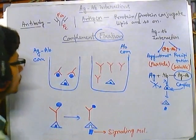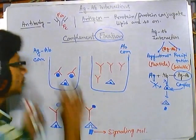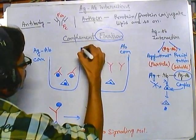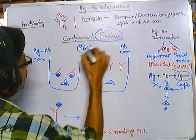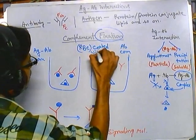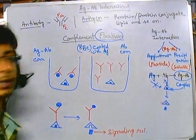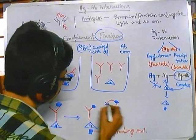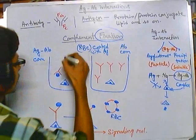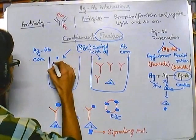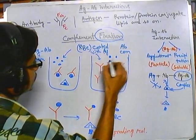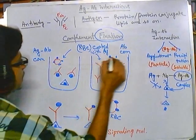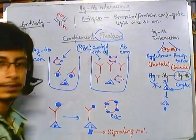We take blood or serum from two different patients. After having all these things in our vial, we add what is called RBCs coated with antigen. Here is the RBC with antigens attached at different regions. We will add these antigen-coated RBCs to both cases.